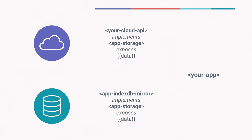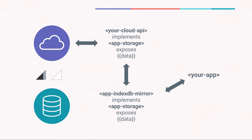When you're online, your cloud API component has no problem interfacing with your REST API. It pipes that data through the IndexDB mirror component, which then pipes the data to your app. When you go offline, your cloud API component can no longer communicate with its REST endpoint. But since we've been piping all of that data through the app IndexDB mirror component, we have all of that locally stored in an IndexDB instance on our device, and so we can boot up our application even when we're offline.